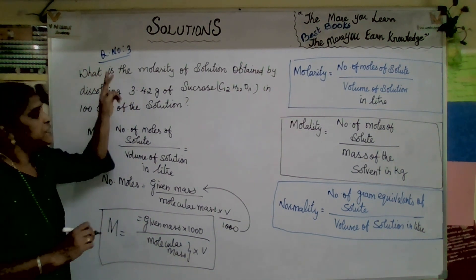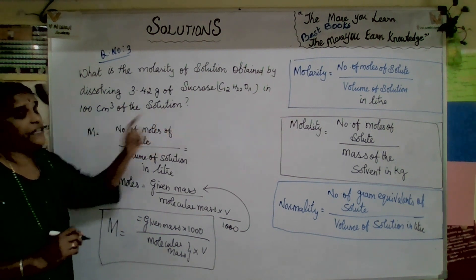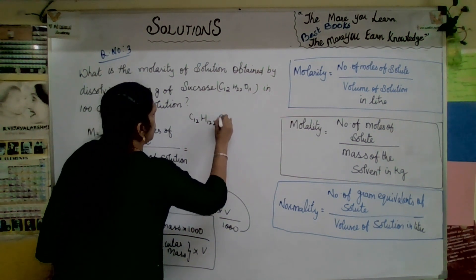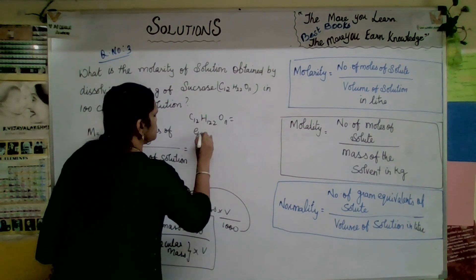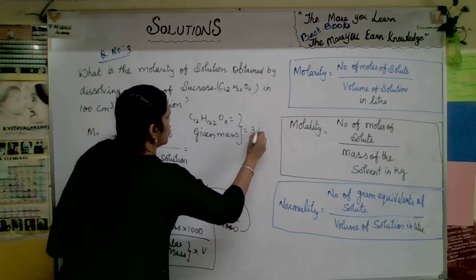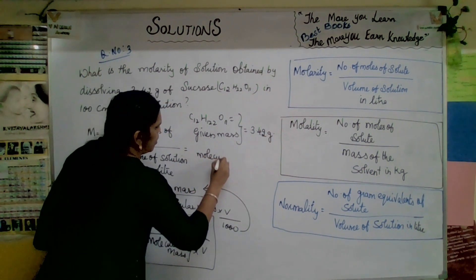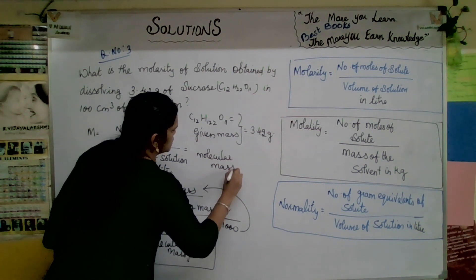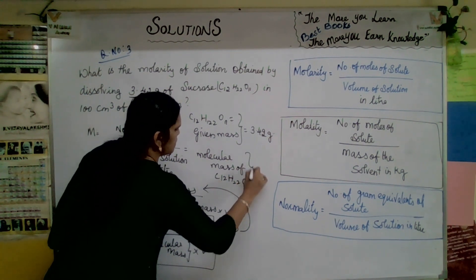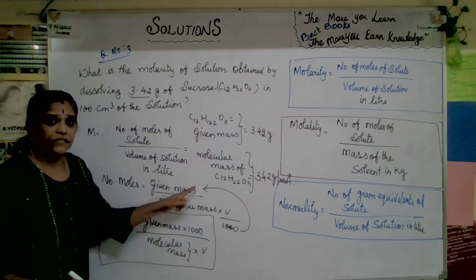Now let us identify the values in this problem. For sucrose C12H22O11, given mass equals 3.42 grams, and the molecular mass of C12H22O11 is 342 grams per mole.